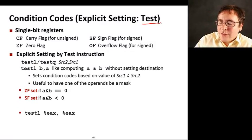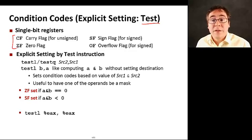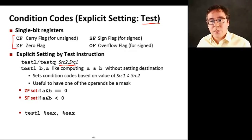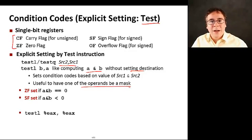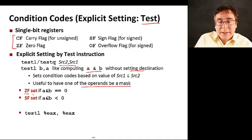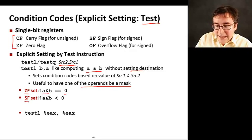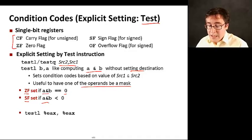Let's see how to set condition codes with the test instruction. Test manipulates the same set of single-bit condition code registers and takes two operands as parameters. It works like computing A bitwise and with B without setting the destination. This is useful to have operands be a mask, because test with masks using bitwise and is very useful. The ZF flag is set if A bitwise and B equals zero. SF is set if A bitwise and B is less than zero, if the most significant bit is set to one.